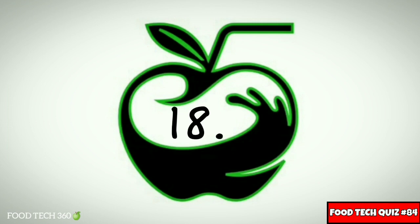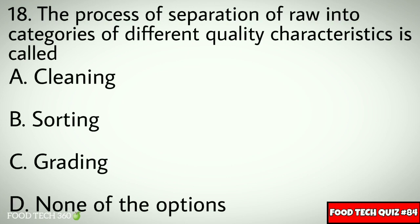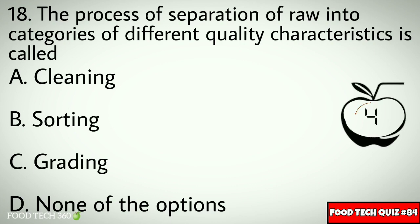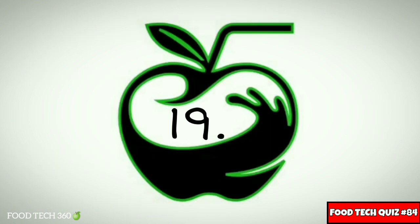Question number 18: The process of separation of raw materials into categories of different quality characteristics is called — Options: A. Cleaning, B. Sorting, C. Grading, D. None of the options. Correct answer: C. Grading.